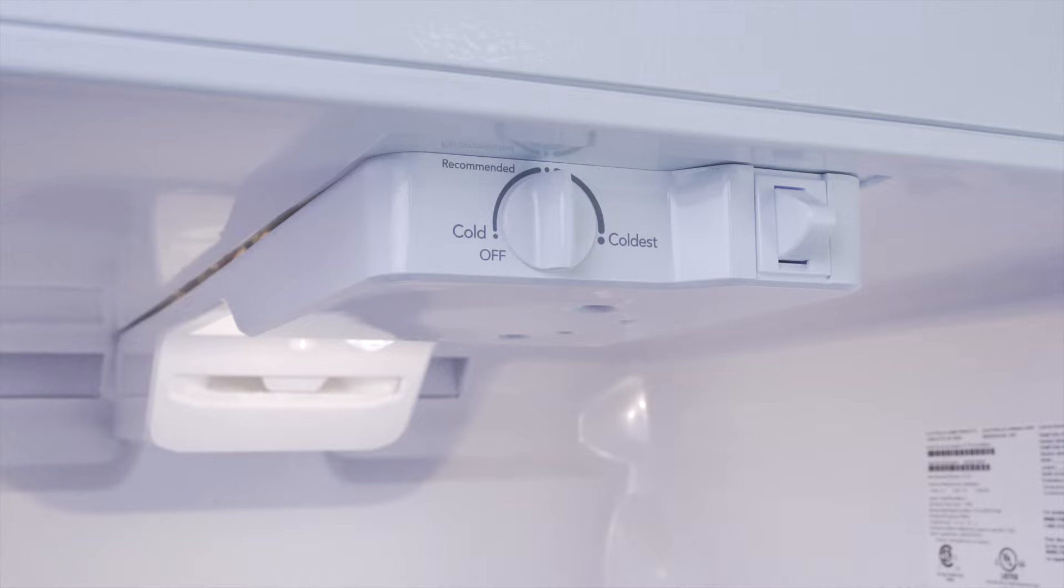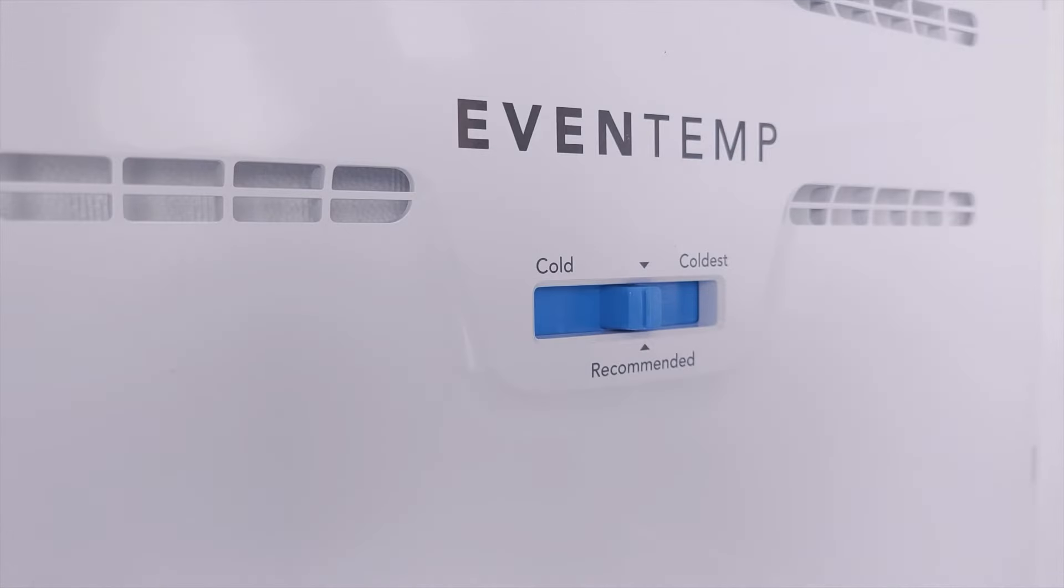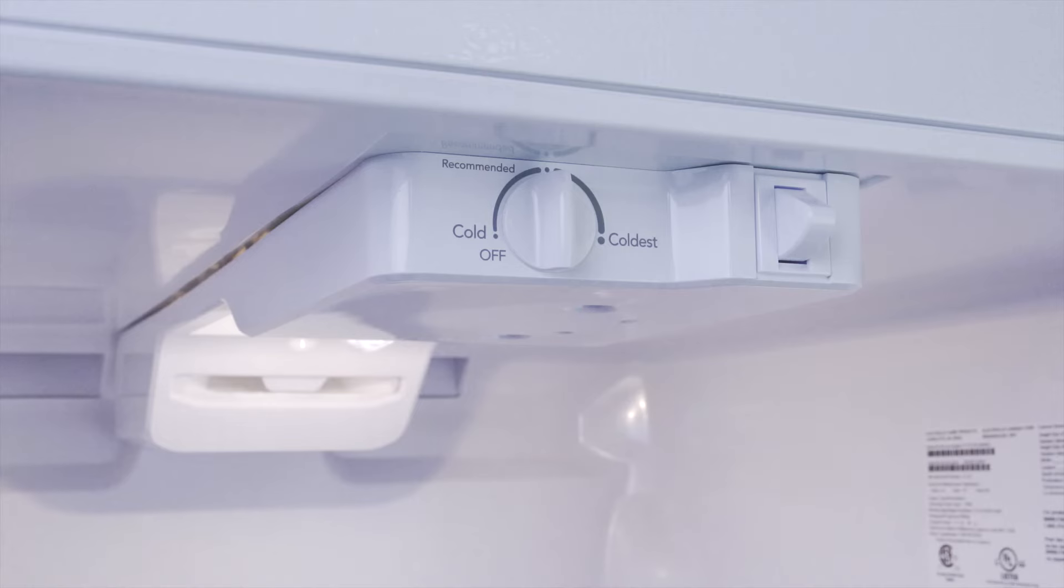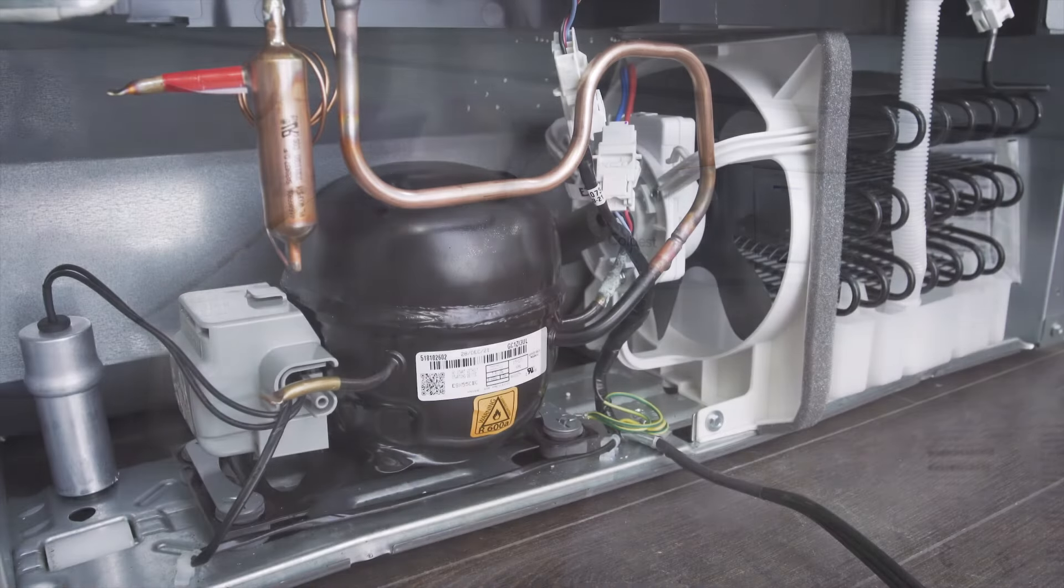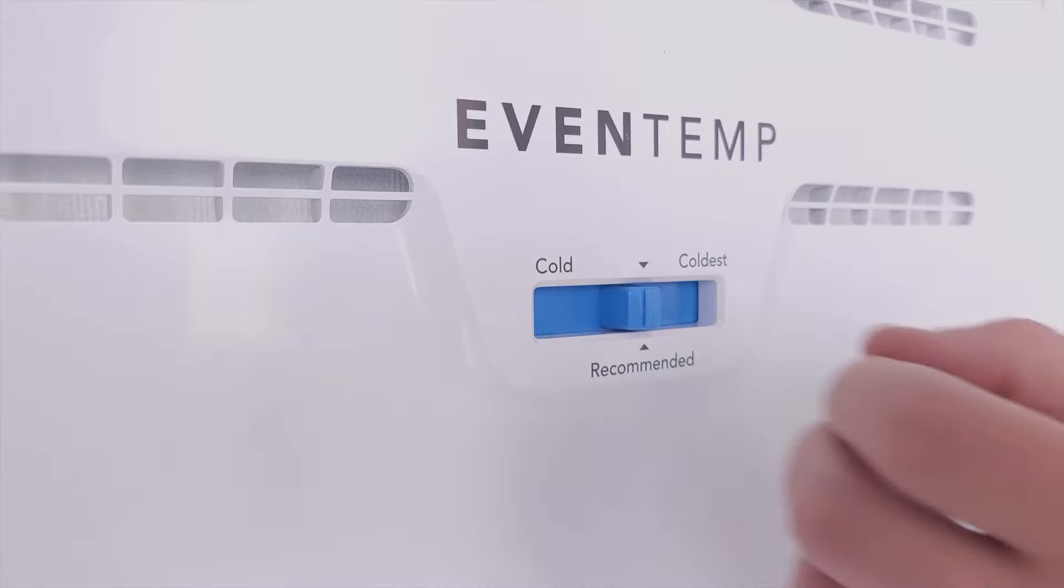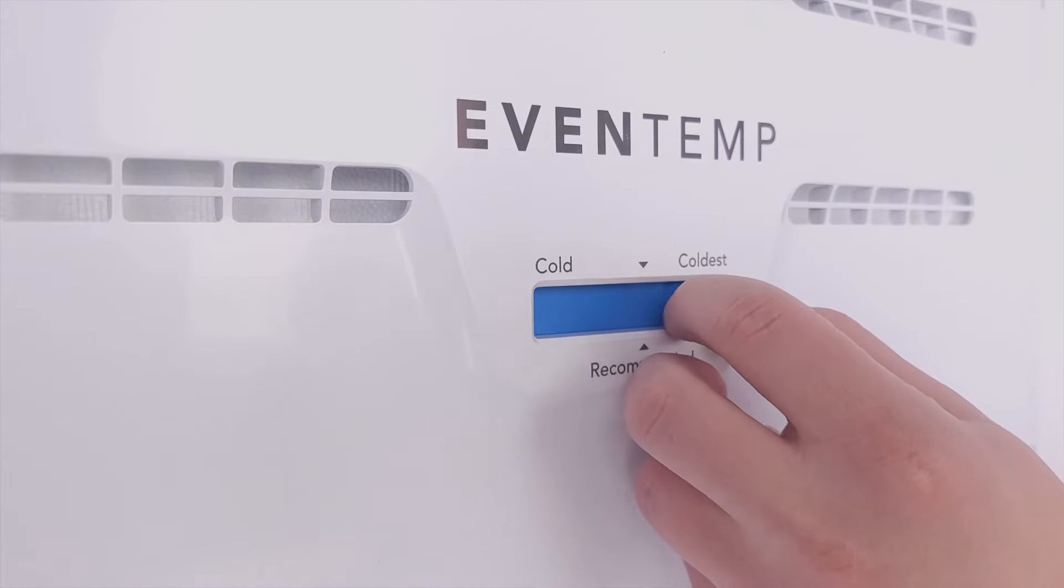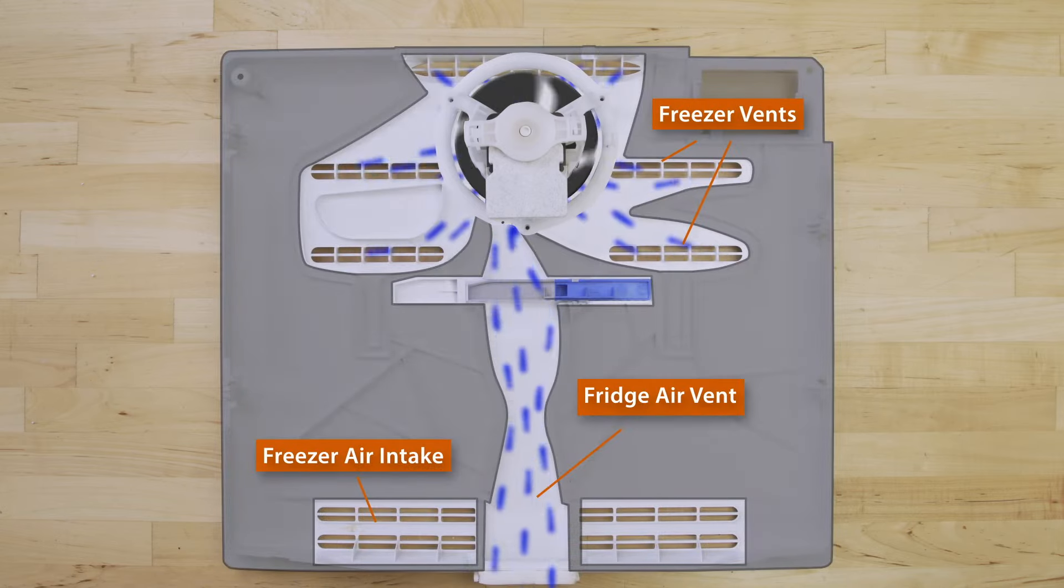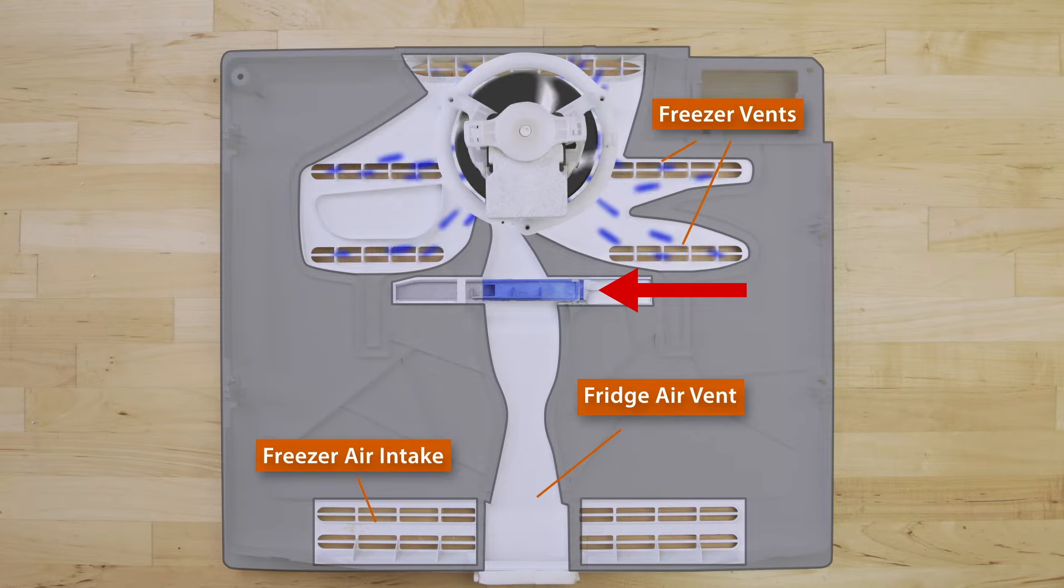Most refrigerators will have temperature controls for the fridge and the freezer. The thermostat monitors the temperature inside the fridge compartment. Adjusting this setting will change how much the compressor runs. The freezer temperature is changed by adjusting the airflow. When the damper closes, less air circulates into the fridge and more cold air stays in the freezer. So it doesn't matter what the freezer dial is set to, the thermostat still maintains the same temperature inside the fridge.